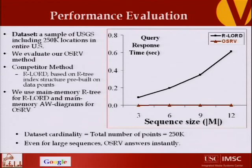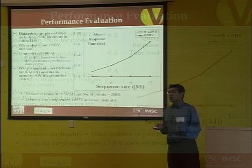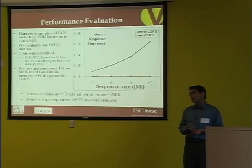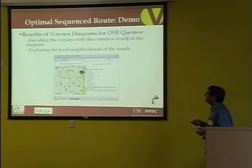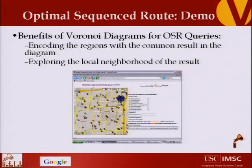An audience question: is R-tree just a spatial index like a BSP tree or an R-tree? Yes, R-tree is a spatial index — actually a regular index structure used in Oracle and DB2. The benefit of our approach is that we encoded all regions with the same result in one Voronoi cell, so we can just locate points and get the result. We explored the local neighborhood that included the result.